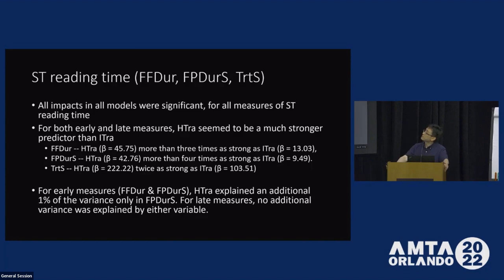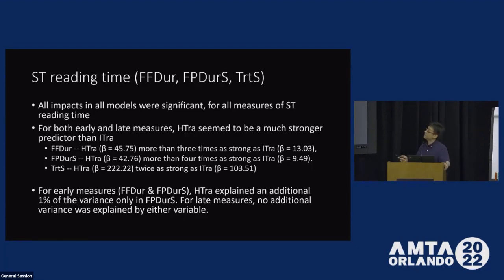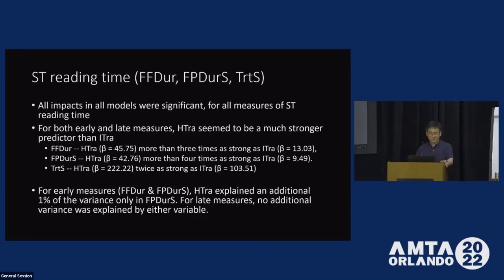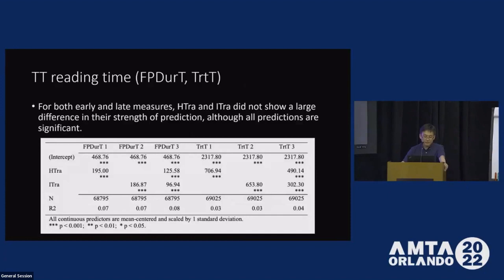However, if we look at the reading time, we see something very different. For the ST reading time, all impacts in all models were significant for all measures of ST reading time. And for both early and late measures, EXTRA seems to be a stronger predictor than ITRA — this is the opposite from the result on production time. For early measures, EXTRA explained an additional 1% of the variance in one of these measures. And for late measures, no additional variance was explained by either variable. This is very different from production time. In terms of TT reading, we don't see much of a difference between the two, although all predictions are significant.